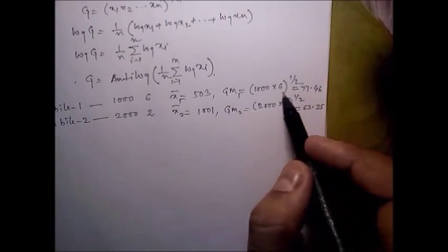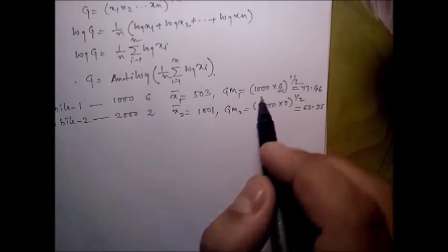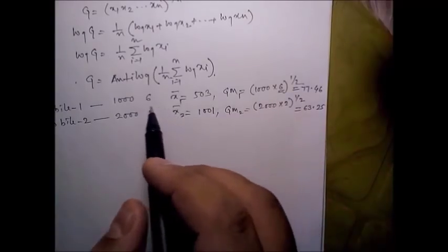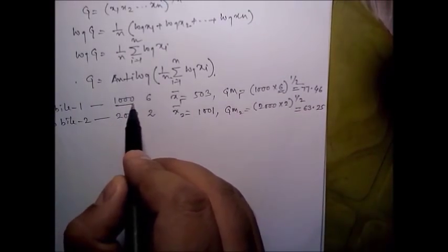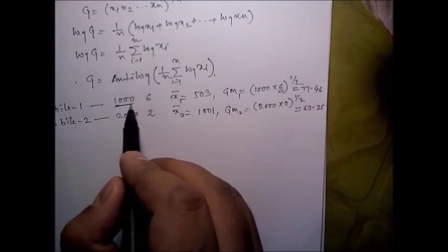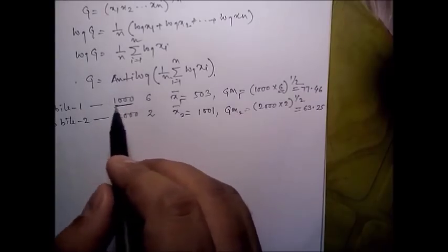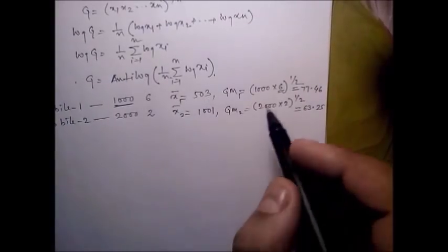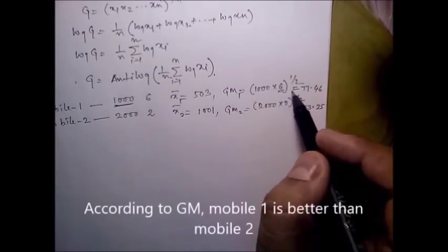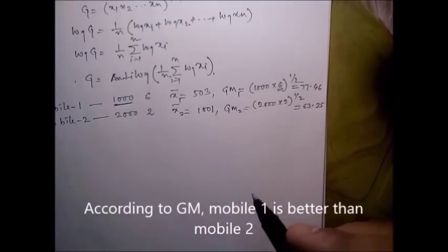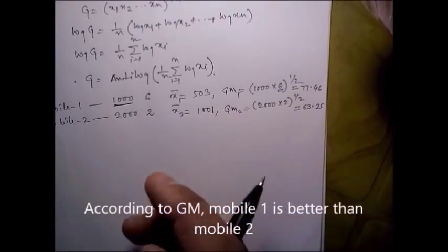So geometric mean gives more weight to the value 6 (small item). With arithmetic mean, the large battery power value dominates the answer. In geometric mean, the minimum value has more influence on the result. That is the use of geometric mean.